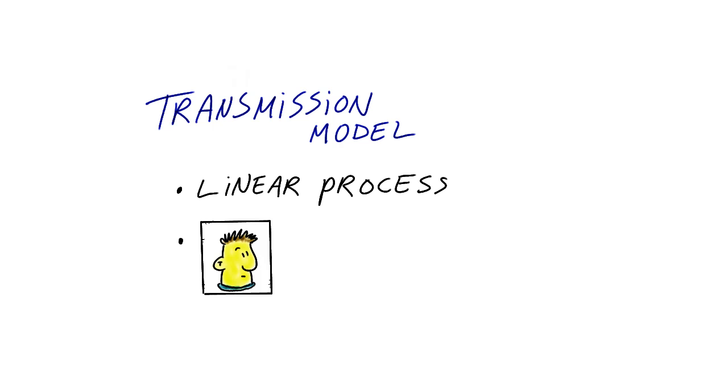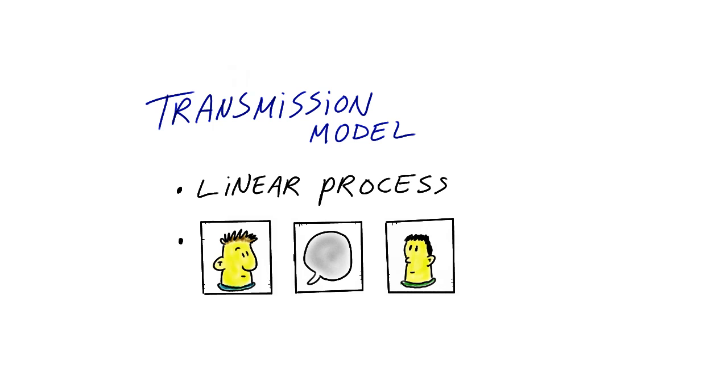When we talk about theories, the first theory to discuss is the basic transmission model. This model reflects dominant thought of communication by proposing communication as a linear process that starts with the sender, who creates a message that somehow ends up with an audience — a receiver.